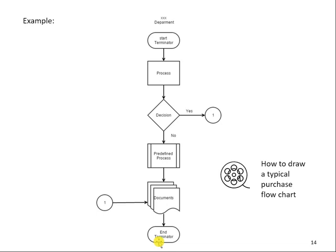But if the decision is no, we go to another process — this is a predefined process. Organizations can predefine a lot of processes. For example, this could be further verification or receiving payment as a predefined process. Then we have multiple documents again, sent to the end terminator.